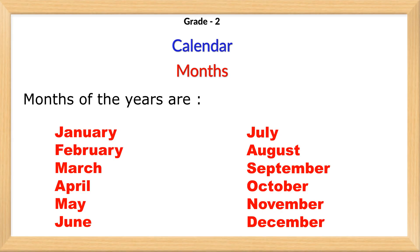Months of the year are January, February, March, April, May, June, July, August, September, October, November, and December.